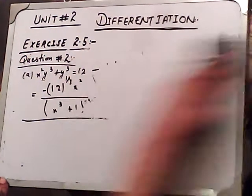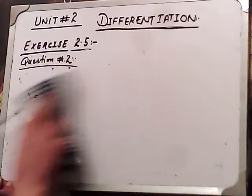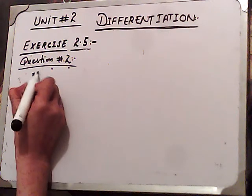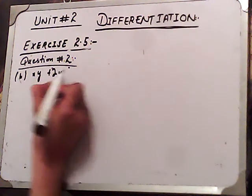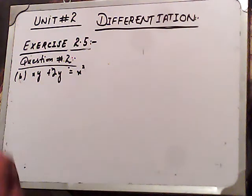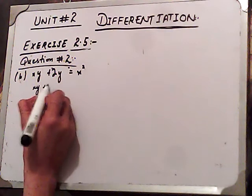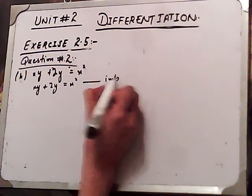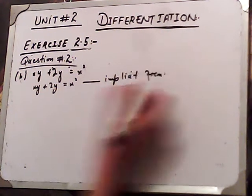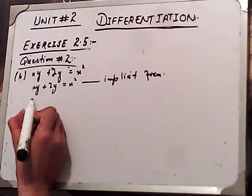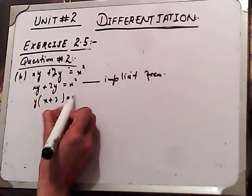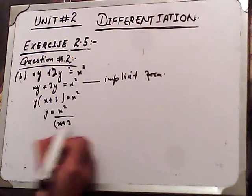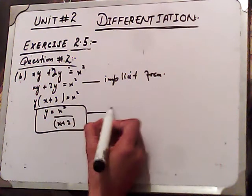Now we do Part B. It's a little tricky, but with practice it becomes easy. Part B: xy plus 2y equals x squared. This is given in implicit form. To make the explicit form, take y as common: y(x plus 2) equals x squared, so y equals x squared divided by (x plus 2). This is the explicit form.